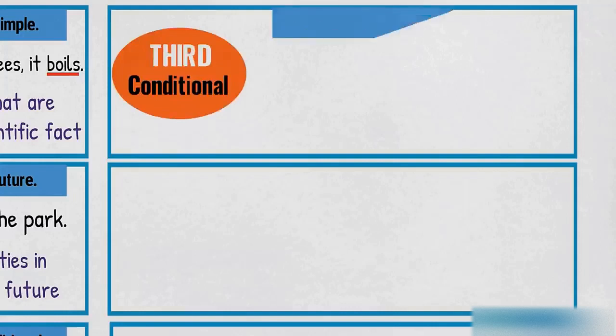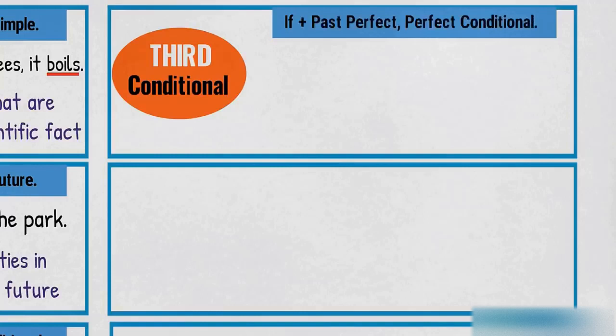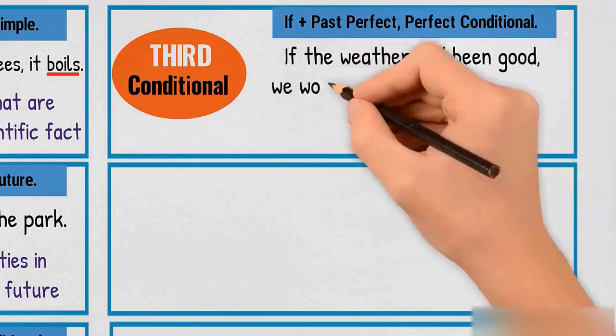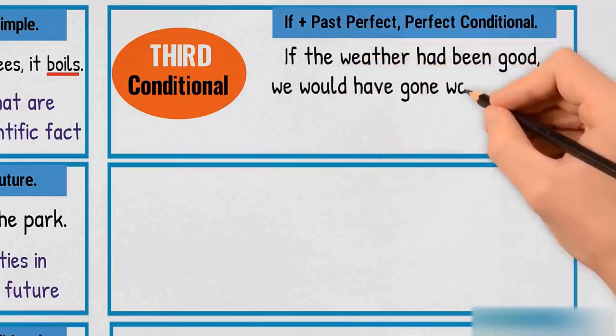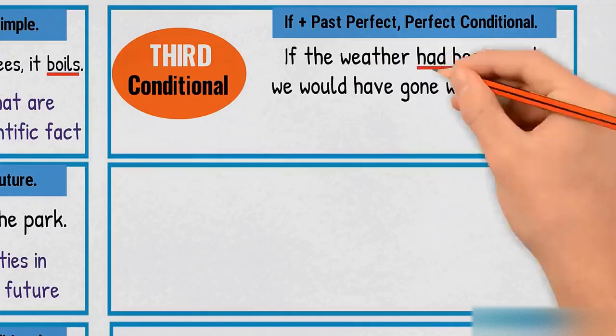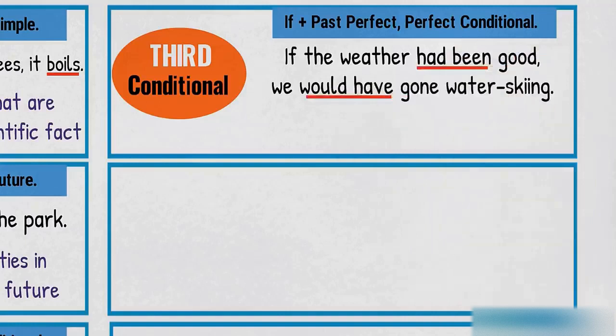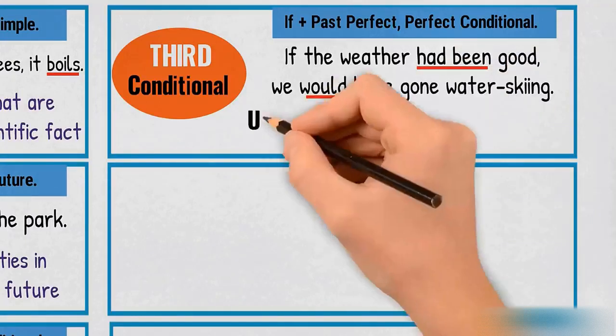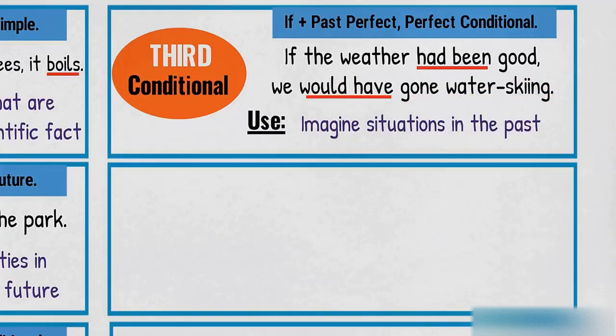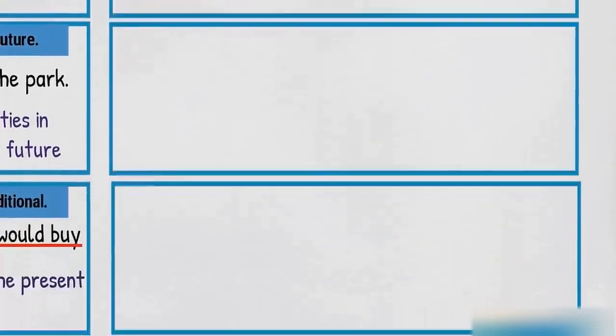Third conditional. If the weather had been good, we would have gone water skiing. Use: Imagine situations in the past.